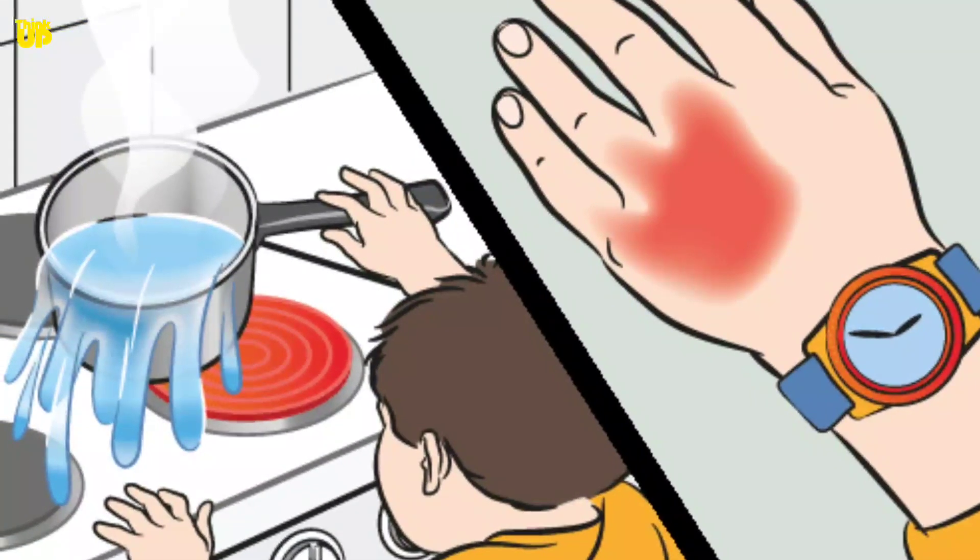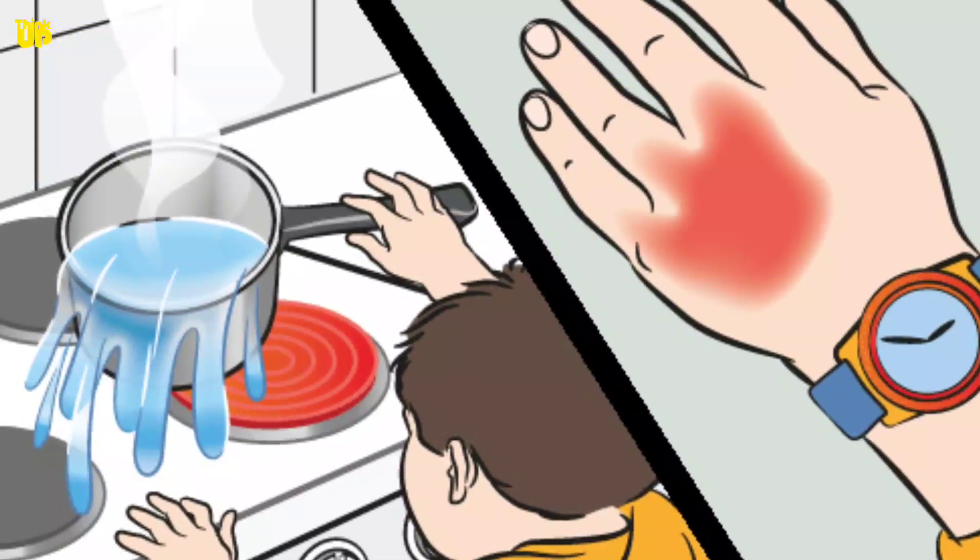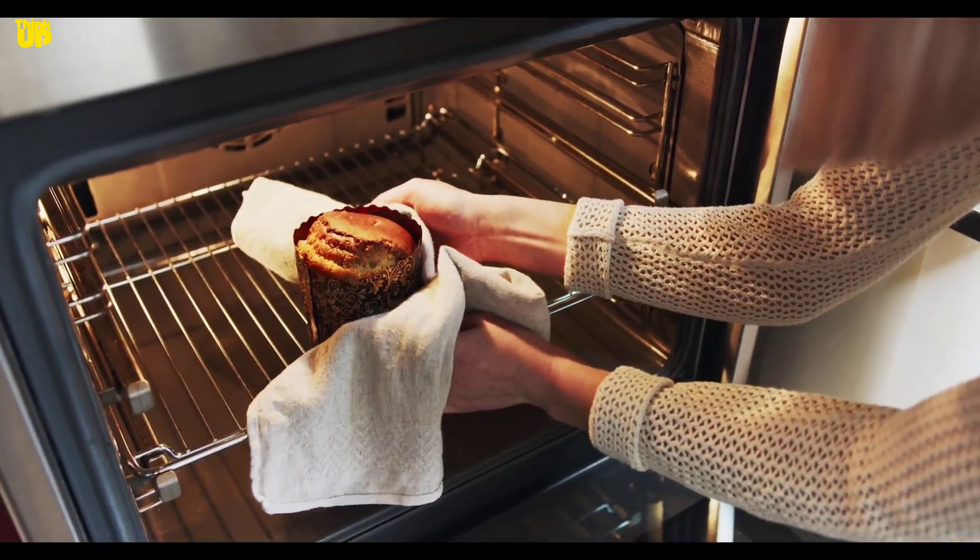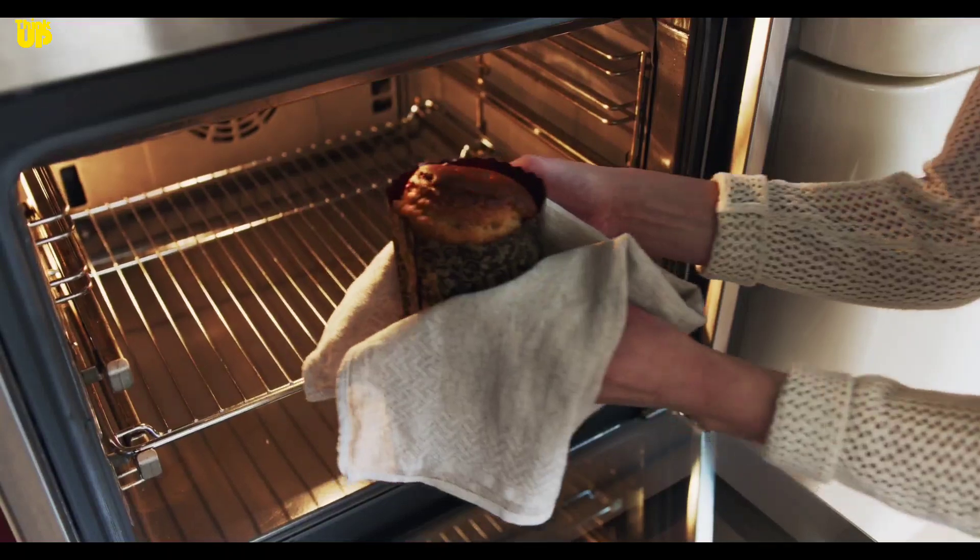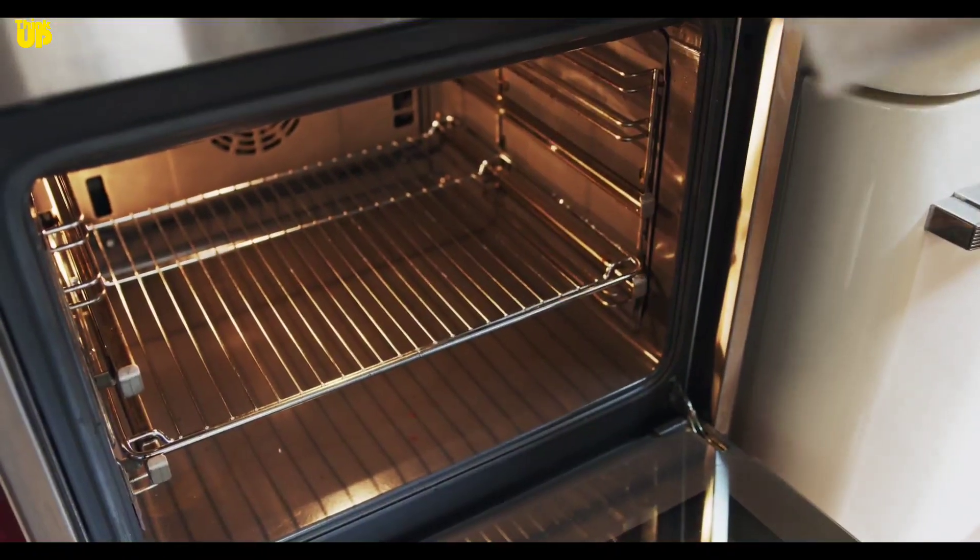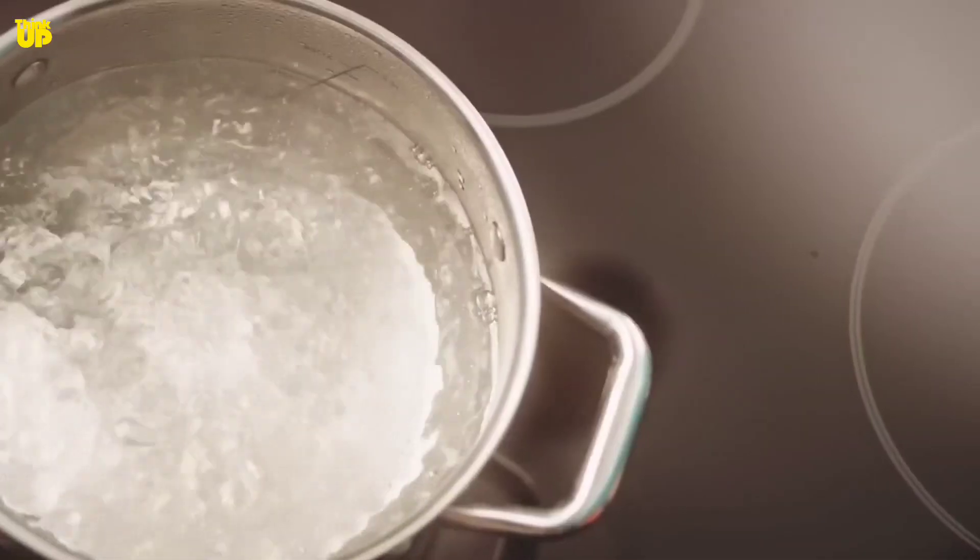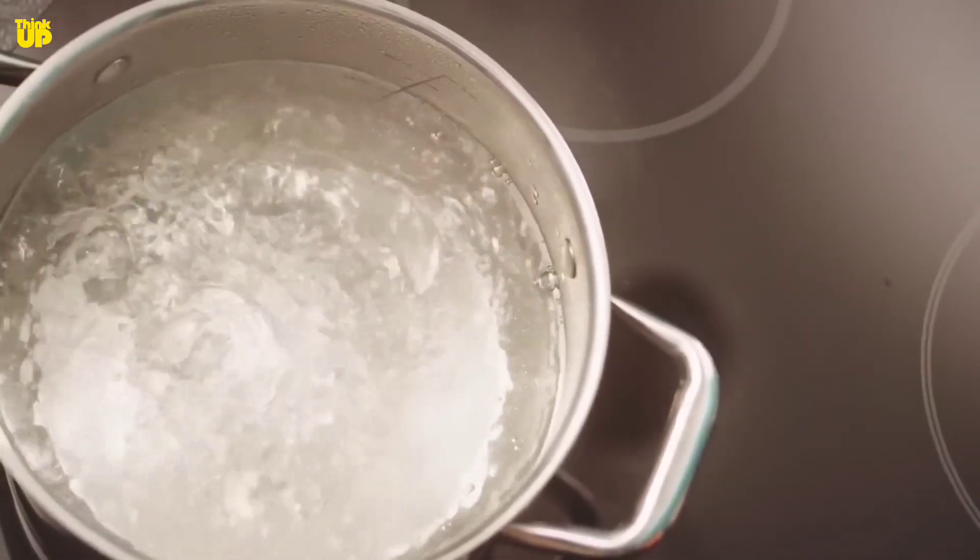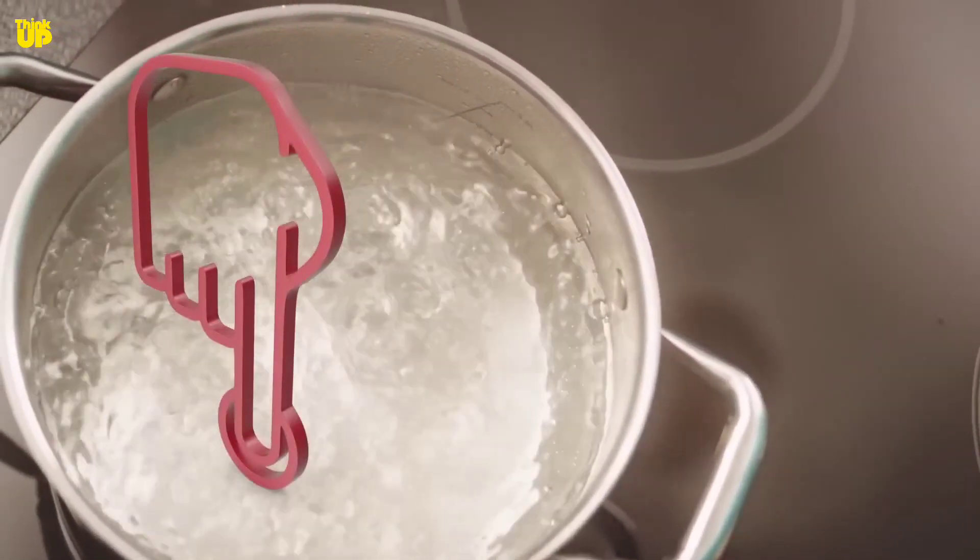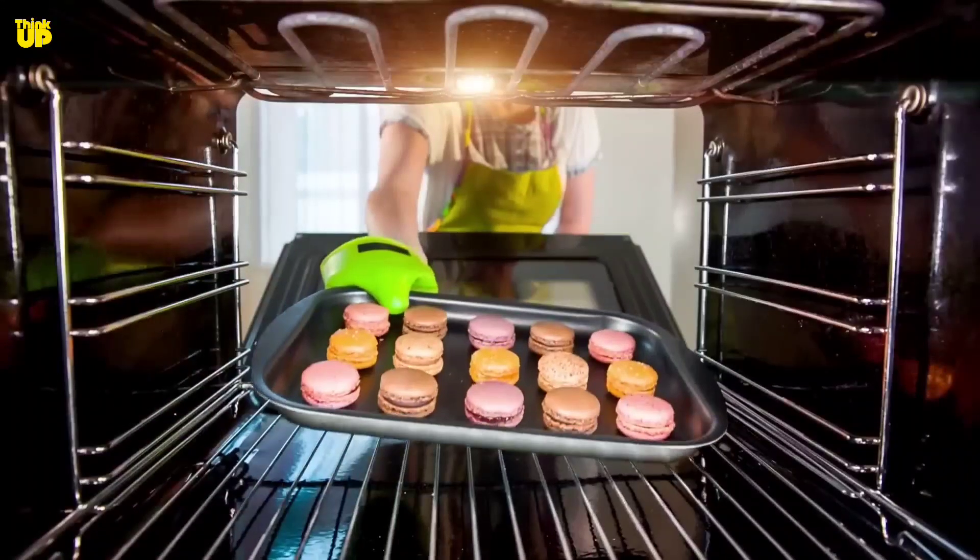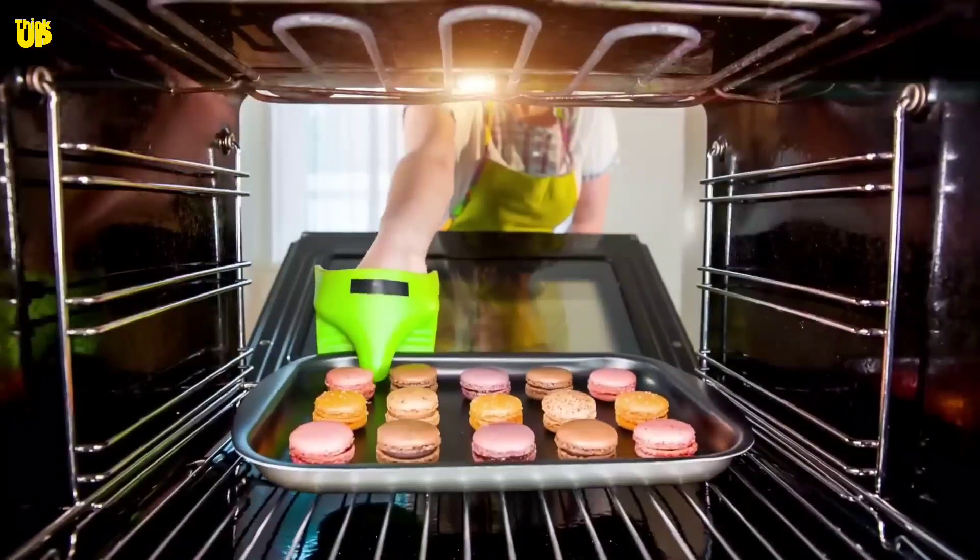For example, if you put your hand in boiling water, it will burn immediately, whereas if you put your hand in a 300-degree oven and take it out immediately, you may not feel any heat. This is possible only because the water molecules come in direct contact with our skin, whereas in the oven, there is no direct contact.